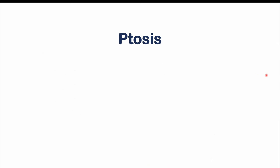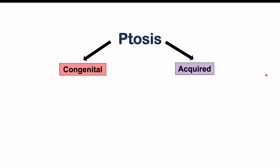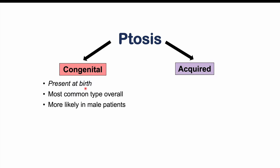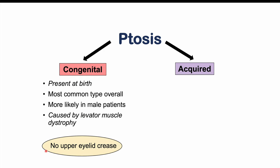We break down the causes of ptosis into congenital and acquired. Congenital ptosis is present at birth and is actually the most common type overall, more likely in male patients. Congenital ptosis is caused by levator muscle dystrophy, and a particular clinical finding is the absence of an upper eyelid crease.